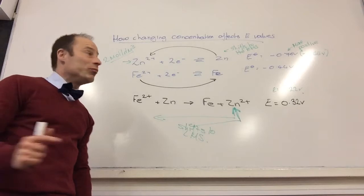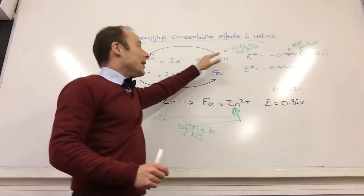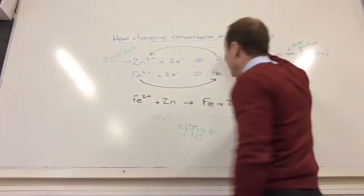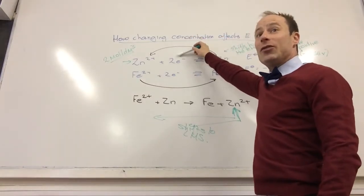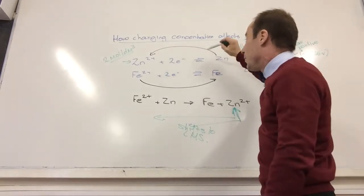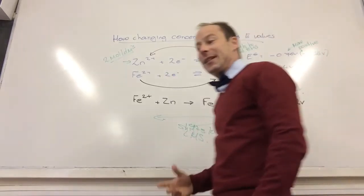And this comes up quite a lot on the papers. So you talk about, always look at the effect on the electrons. If you've got more electrons, it's going to become more negative. If you shift it the other way, less electrons, it becomes less negative.